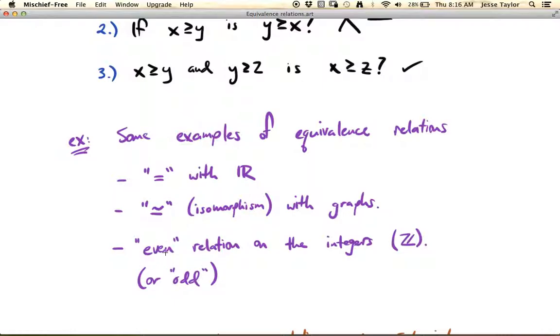And then one more. I've got here in quotes the even relation on the integers. So this is essentially a parity check. Parity just means even or odd. So if you think about the even numbers, a number, an integer, so that's denoted with this blackboard Z, an integer is related to another integer if they are both even. Of course, if you take an even integer, it's related to itself because it's still going to be even.